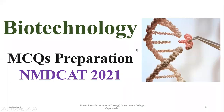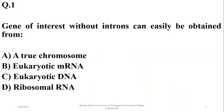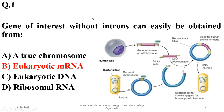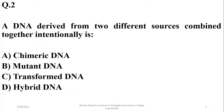This video is about MCQs related to biotechnology. Question number one: a gene of interest without introns can easily be obtained by using a messenger RNA molecule through the process of reverse transcription in eukaryotes, so beta is the right option. A gene obtained from messenger RNA will be pure without any interrupting sequences, non-coding sequences, or introns.